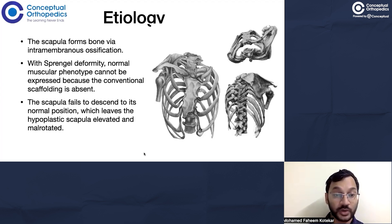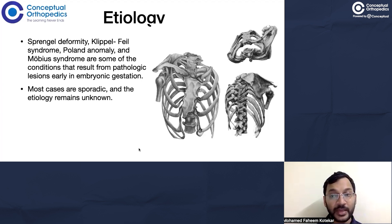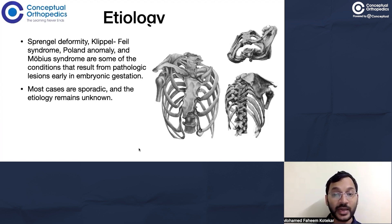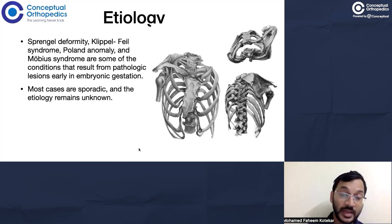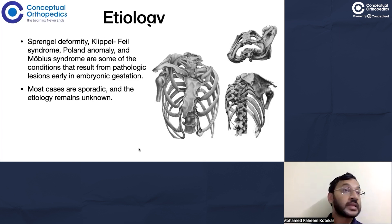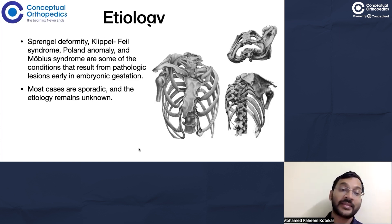The scapula fails to descend to its normal position, leaving it hypoplastic, elevated, and malrotated. This condition often presents along with other deformities such as Klippel-Feil syndrome, Poland anomaly, and Moebius syndrome, as these all arise from embryonic developmental problems. Most cases are sporadic and the etiology remains unknown, but two leading theories exist: a vascular theory involving abnormal subclavian vasculature during embryonic development, and a genetic theory suggesting autosomal dominant inheritance, though neither is proven.